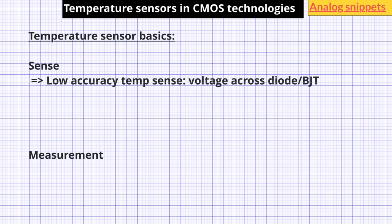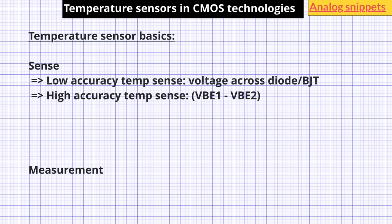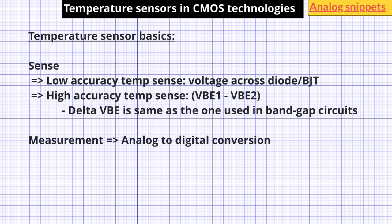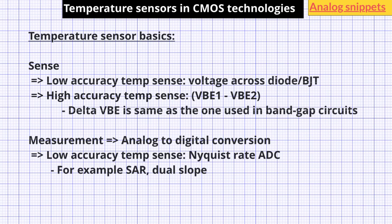All smart temperature sensors are made of two parts: the sense part and the measurement part. Most low accuracy temperature sensors use voltage across a diode or BJT as the temperature sensor. Most high accuracy thermal sensors use delta VBE as the temperature sensor. This delta VBE is the same as the one used in bandgap circuits. Measurement usually means analog-to-digital conversion. Most low accuracy temperature sensors use Nyquist rate ADCs, such as SAR ADC or dual slope ADCs. Most high accuracy temperature sensors almost always use oversampled or delta-sigma ADCs.